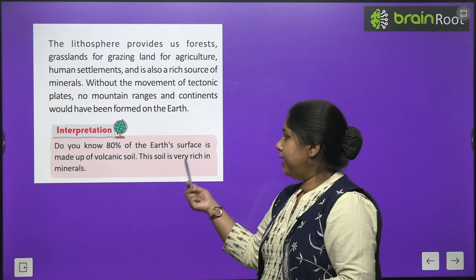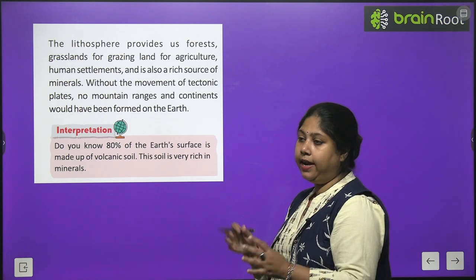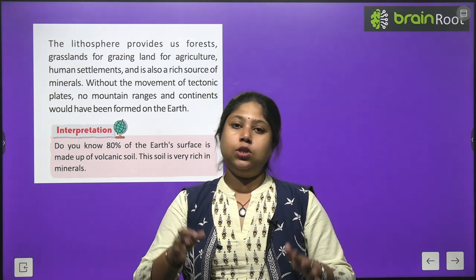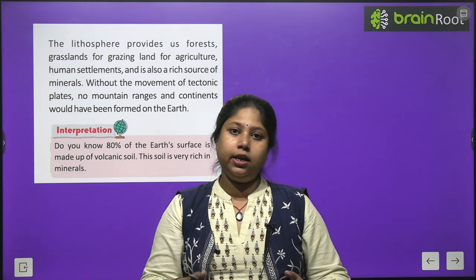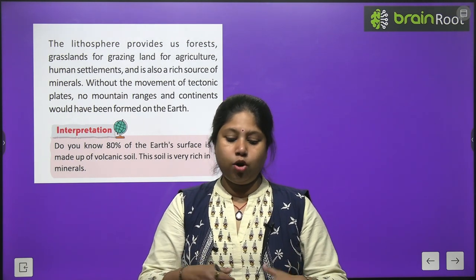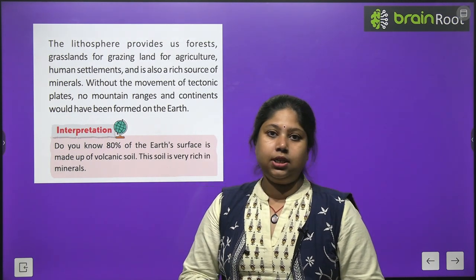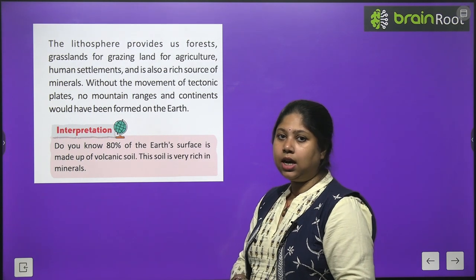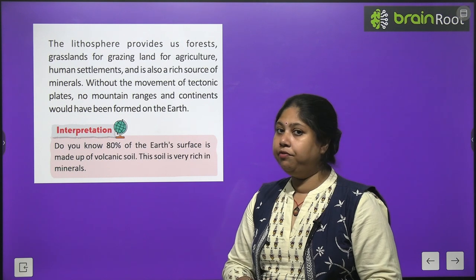Do you know that 80% of the Earth's surface is made up of volcanic soil? This soil is very rich in minerals. When volcanic eruptions occur, lava comes out in the form of magma, and after slowly cooling down, it gradually forms rocks and soil. So 80% of Earth's soil is a result of volcanic eruptions, and this soil is rich in different minerals.